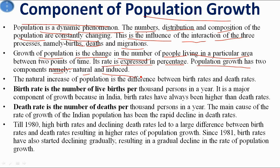Population growth has two components: natural and induced. Natural components are birth rate and death rate, which influence population growth directly. Induced components arise from migration, making migration an induced component of population growth. The natural increase of population is the difference between birth rate and death rate.